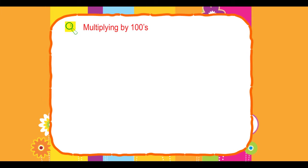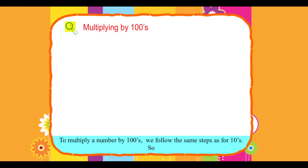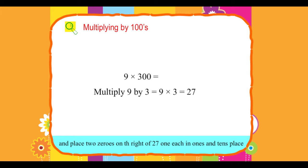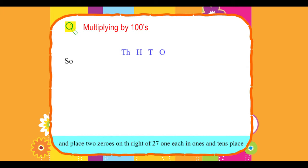Multiplying by hundreds. To multiply a number by hundreds, we follow the same steps as for tens. For example, 9 into 300: multiply 9 by 3, which equals 27, and place two zeros on the right of 27, one each in the ones and tens place.